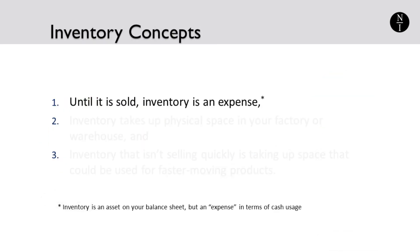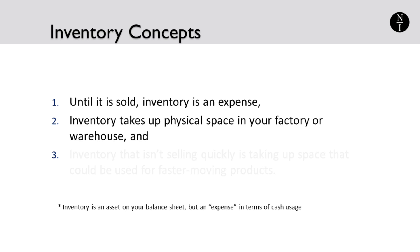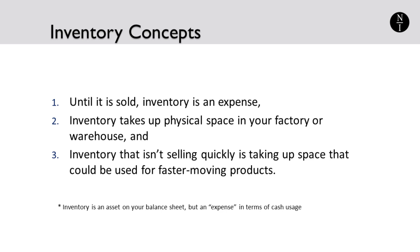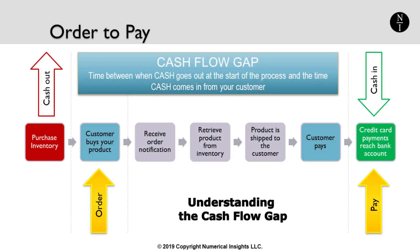The most important concepts to understand about inventory are that, until it is sold, inventory is an expense. Inventory takes up physical space in your factory or warehouse, and inventory that isn't selling quickly is taking up space that could be used for faster moving products. The conversion of cash to inventory was shown in a previous video. If you're not familiar with that challenge, feel free to view the video called Understanding the Cash Flow Gap to learn how inventory restricts a business's available cash.